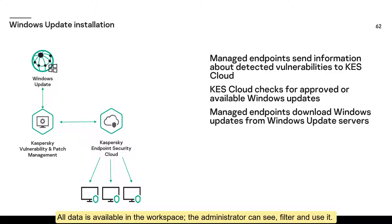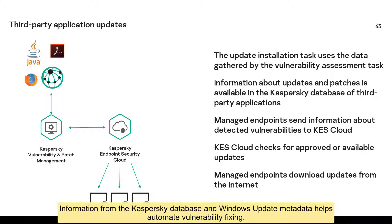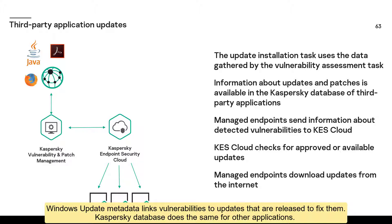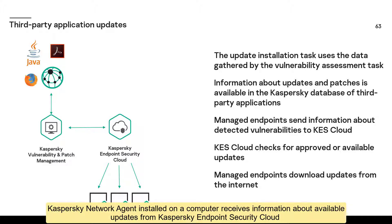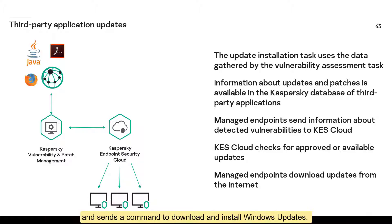All data is available in the workspace. The administrator can see, filter, and use it. Information from the Kaspersky database and Windows Update metadata helps automate vulnerability fixing. Windows Update metadata links vulnerabilities to updates that are released to fix them. Kaspersky database does the same for other applications. Kaspersky Network Agent installed on a computer receives information about available updates from Kaspersky Endpoint Security Cloud and sends a command to download and install Windows updates.